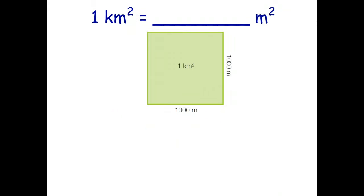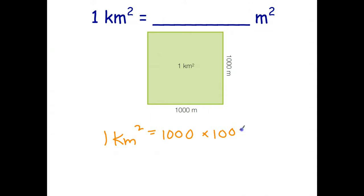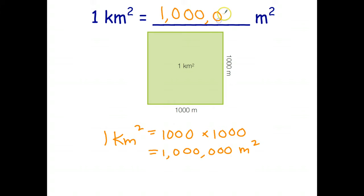I want you to try this one on your own using the same idea. There's one square kilometer. One kilometer is 1,000 meters in length and 1,000 meters in width. Please stop the video and try to work out how many square meters is equivalent to one square kilometer. So: one kilometer squared — I convert one kilometer into 1,000 meters for the length, and 1,000 meters for the width. Therefore I've got a one followed by six zeros. The units are meters squared. One kilometer squared is the same as 1,000,000 square meters.